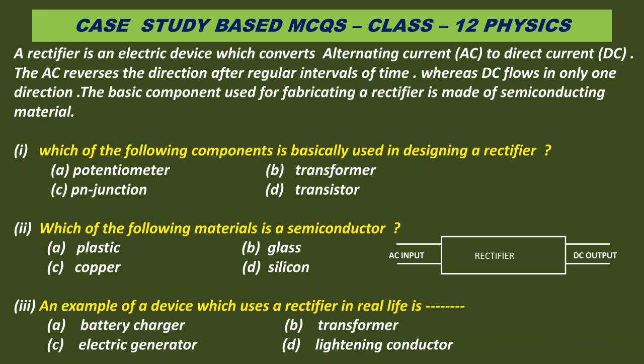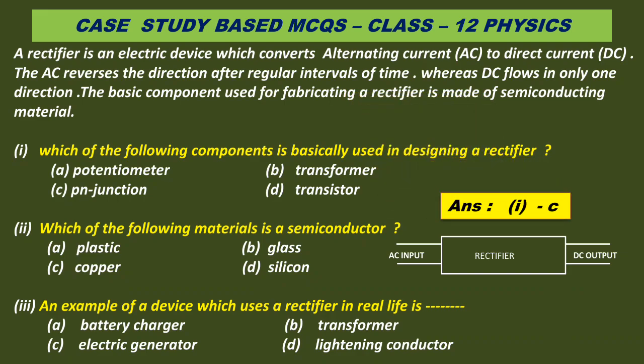Now here are some MCQ questions. Watch carefully and then try to give the correct answer. Question 1: Which of the following components is basically used in designing a rectifier? Option A: potentiometer, B: transformer, C: pn junction, D: transistor. The correct answer is C — pn junction.